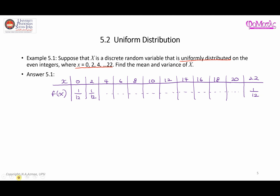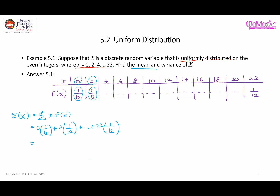To find the mean, E(x), we multiply each x by its f(x) and add them up. So we have 0 times 1/12 plus 2 times 1/12, continuing in this pattern until 22 times 1/12. Factoring out 1/12 gives us 1/12 times (0 plus 2 plus 4 plus ... plus 22), which equals 132 over 12, giving us a mean of 11.